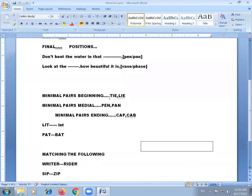Minimal pairs with medial: pen, pan. In the middle of the line, you can see only the E letter. And minimal pairs ending with cap and cab. Last one.